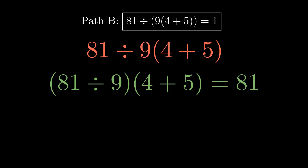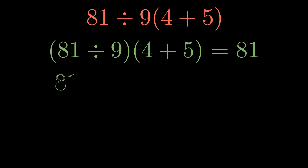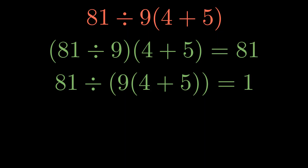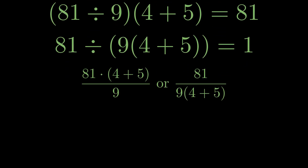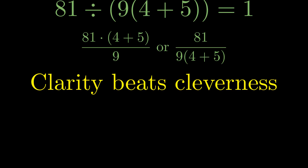Want to express 81? Group the division separately — make it clear you're multiplying two independent results. Want to express 1? Put the denominator in parentheses to show it's a single unified quantity. Even better? Use fraction notation. The horizontal bar makes the structure immediately obvious with no room for confusion. Bottom line: math is communication. If your expression confuses people, you haven't written good math. Choose clarity over cleverness, every time.